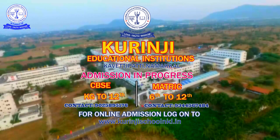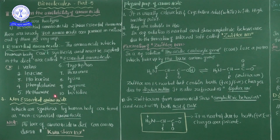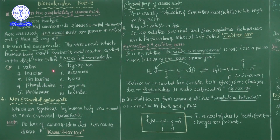Good morning students. In this session we are going to discuss the remaining classification of amino acids. In my previous session, I explained two different types of classification of amino acids: first, the position of amino acid; second, the number of amino groups and number of COOH groups.